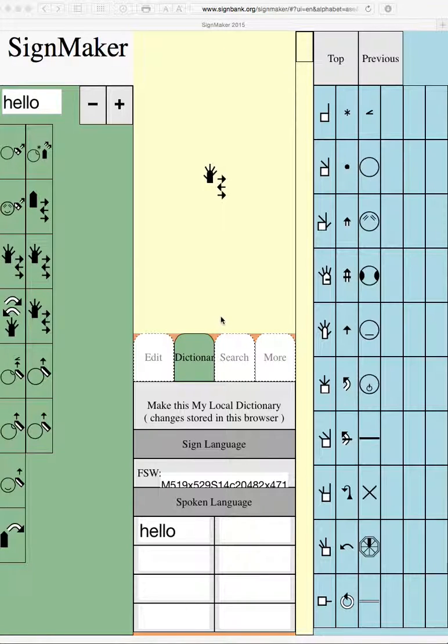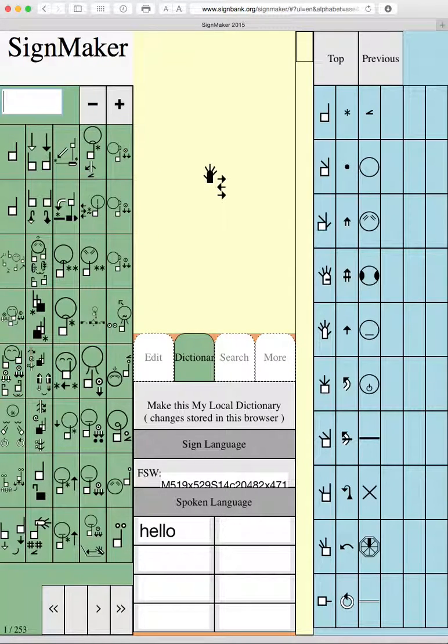Let us imagine you wish to search for more signs in the dictionary. Go back to the search field and delete the word in the green area search field. This gives you the full dictionary again.